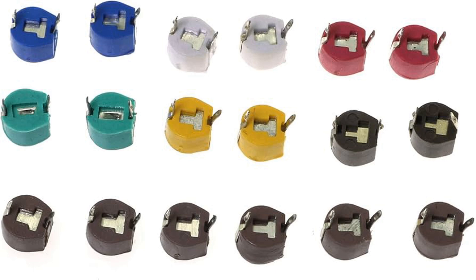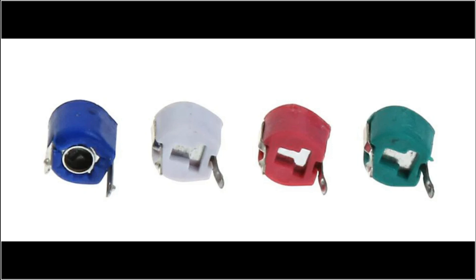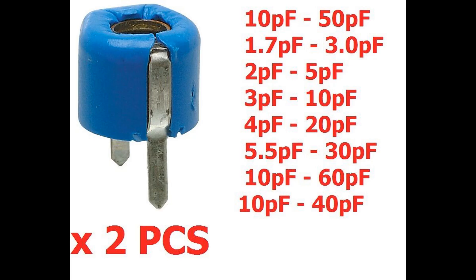In certain amplifier circuits, trimmer capacitors are used to fine-tune the frequency response or phase shift, adjusting the high-frequency response of the amplifier to improve signal clarity or stability. Trimmer capacitors are also found in mobile phones, satellite communication equipment, and wireless devices where precise frequency control is necessary, helping fine-tune communication circuits for clear, reliable signal transmission and reception.